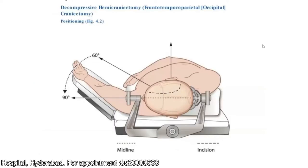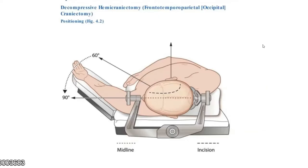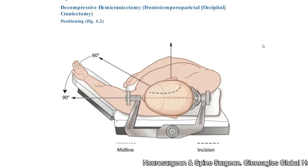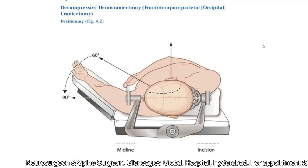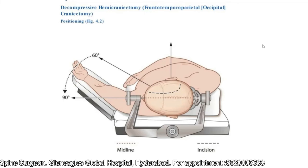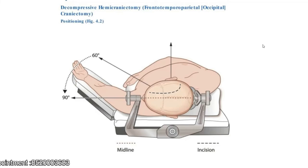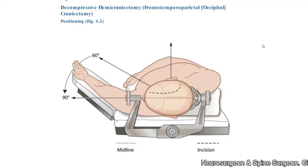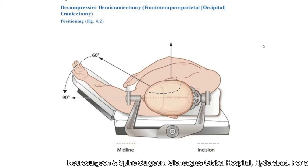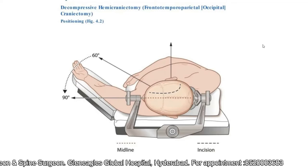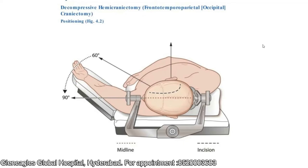Coming to the procedure proper — as in any other procedure, positioning is very important. What are the important things in positioning for decompressive craniectomy? I may either place the head supported on a three-pin headrest for rigid fixation, or because it's an emergency, I personally prefer to keep it with the help of a headrest. Here I have shown a three-pin headrest.